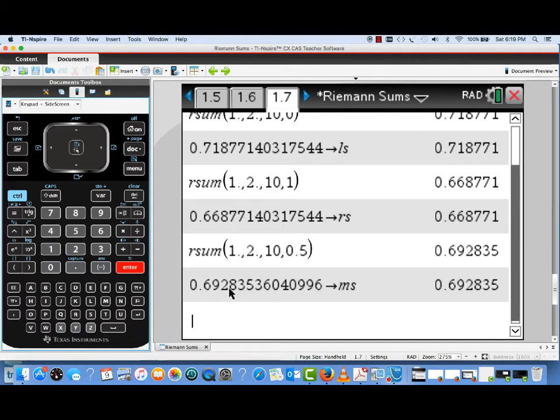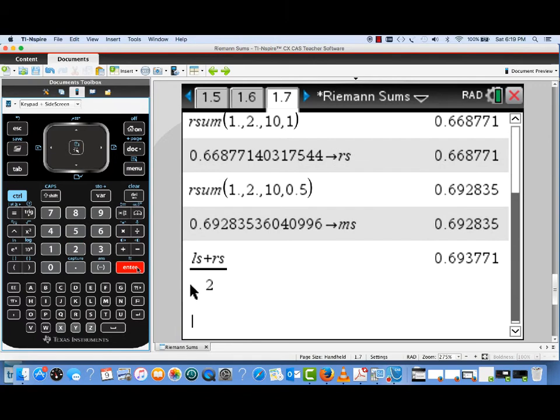And you might wonder, we can see it makes sense that the midpoint sum's between the left sum and the right sum, but is it exactly halfway in between? Well, let's check that out by actually taking the average of the left sum and the right sum. So I'm going to take ls plus rs divide by 2 and see what kind of result I get. Well, they're close to each other, but they're not exactly the same.